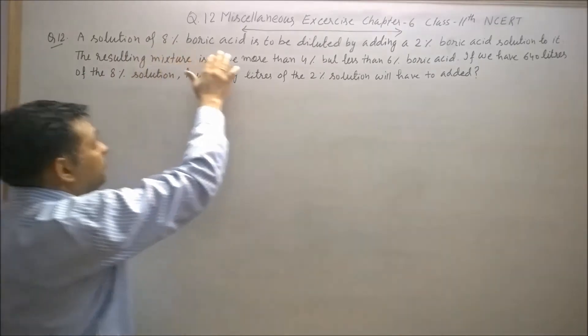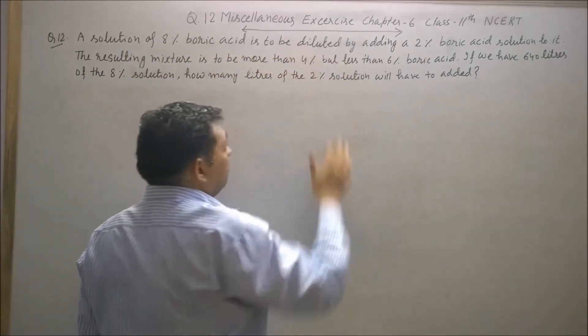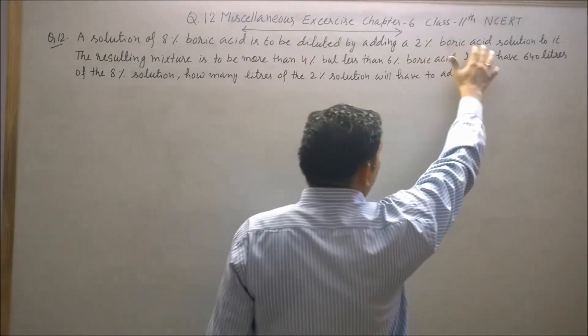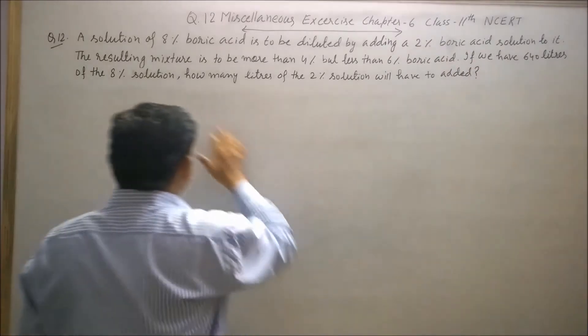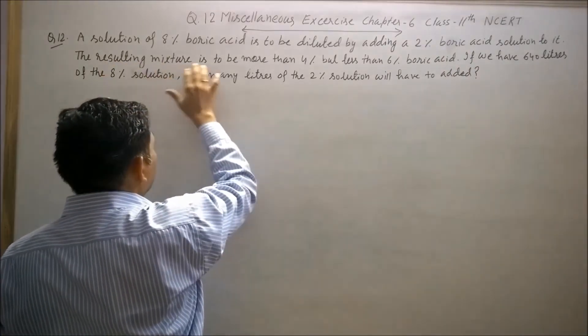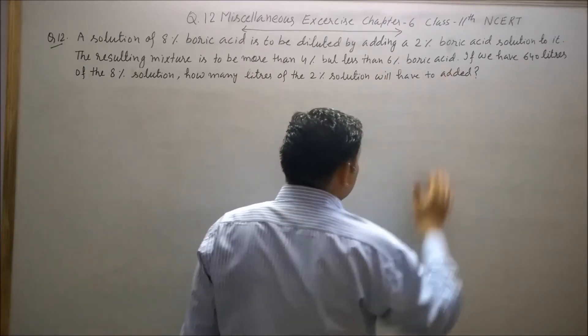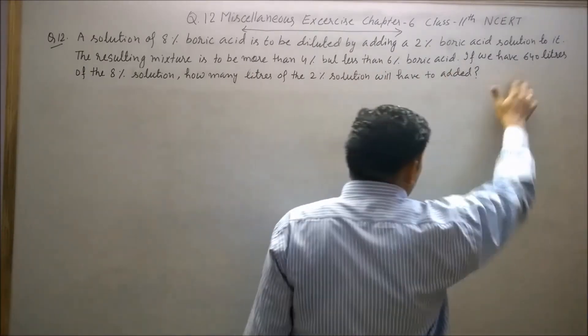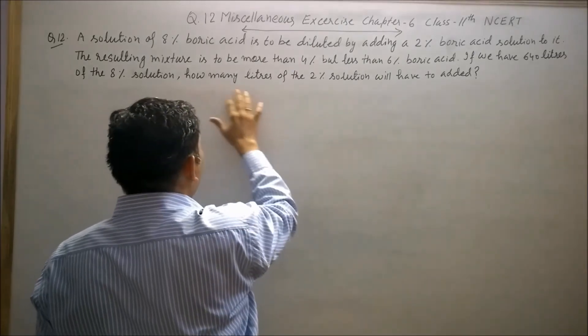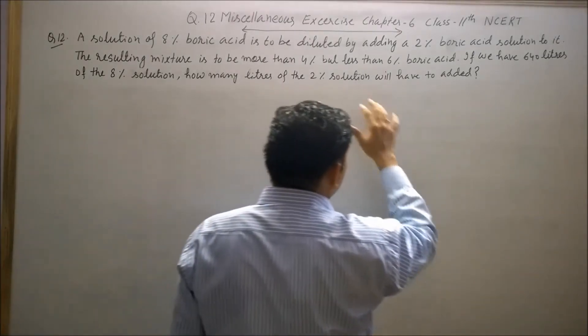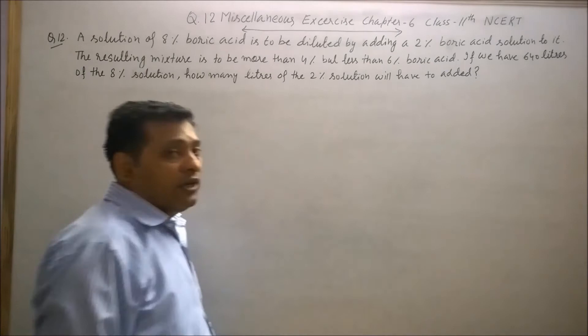The question is: A solution of 8% boric acid is to be diluted by adding a 2% boric acid solution to it. The resulting mixture is to be more than 4% but less than 6% boric acid. If we have 640 liters of the 8% solution, how many liters of the 2% solution will have to be added?